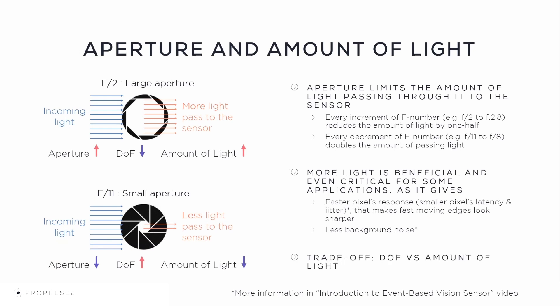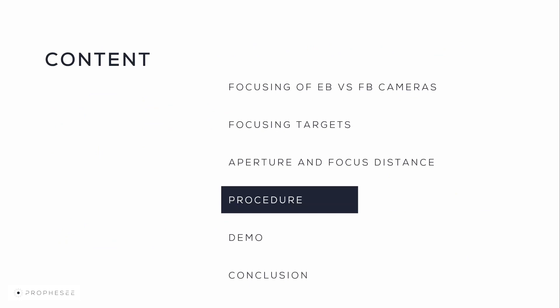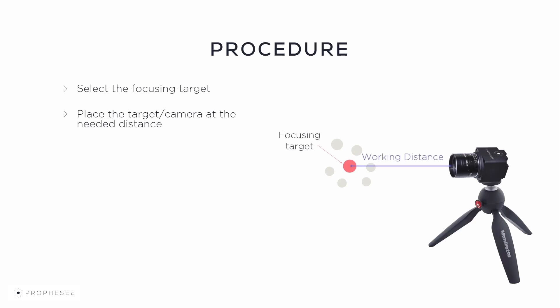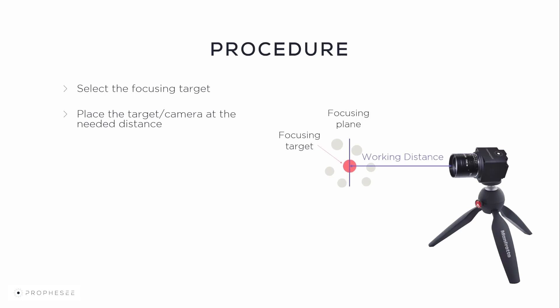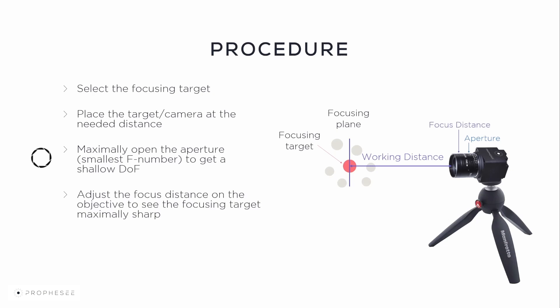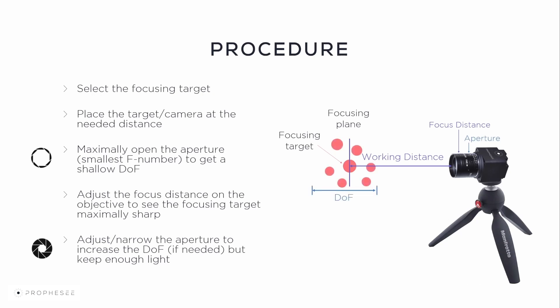Do note that there is a trade-off between depth of field versus the amount of light passing through the objective to the sensor. To begin the focusing, please follow this procedure. First, select the focusing target. Place the target and the camera at the needed distance. Maximally open the aperture, choosing the smallest F number, to get the smallest depth of field. Adjust the focus ring on the objective until you see the focusing target as sharp as possible. Then adjust and narrow the aperture to increase the depth of field if needed, but don't close it too much to keep enough light passing to the sensor.